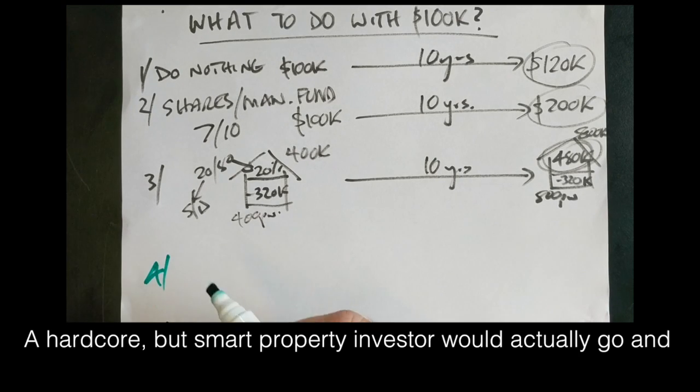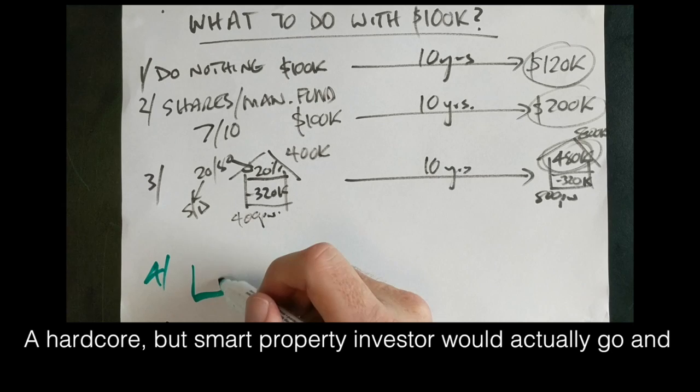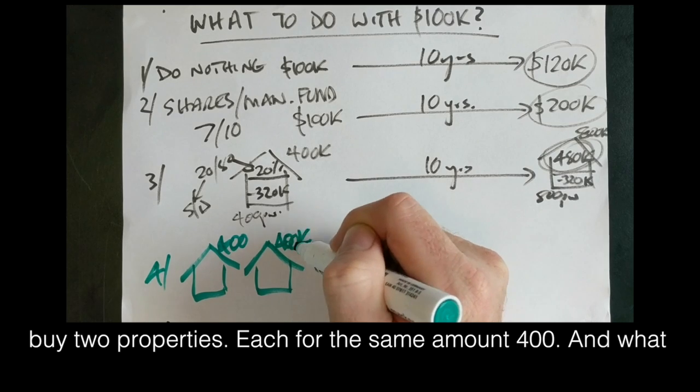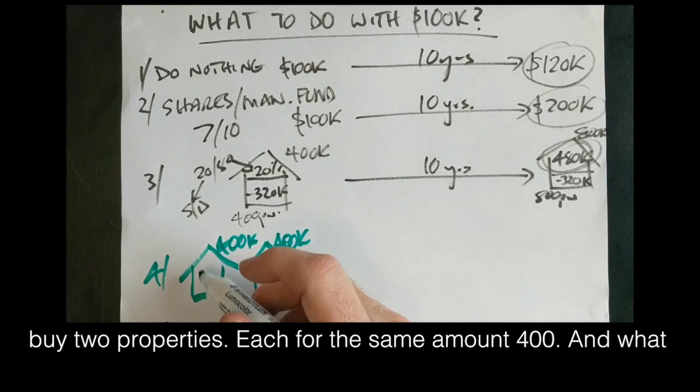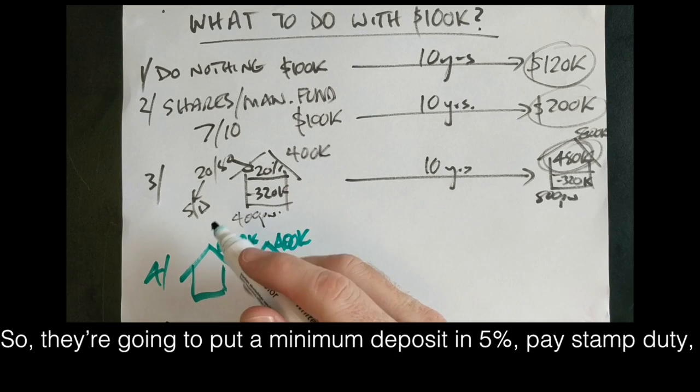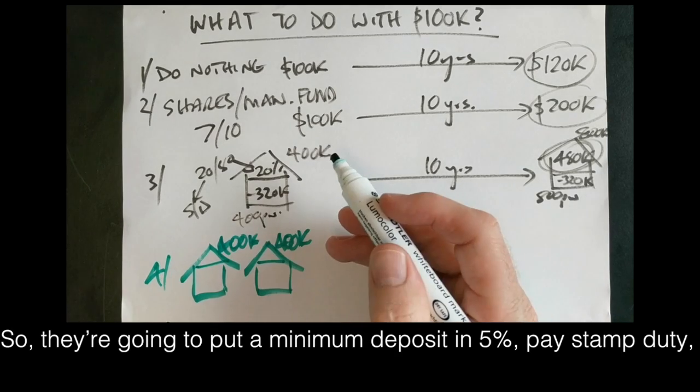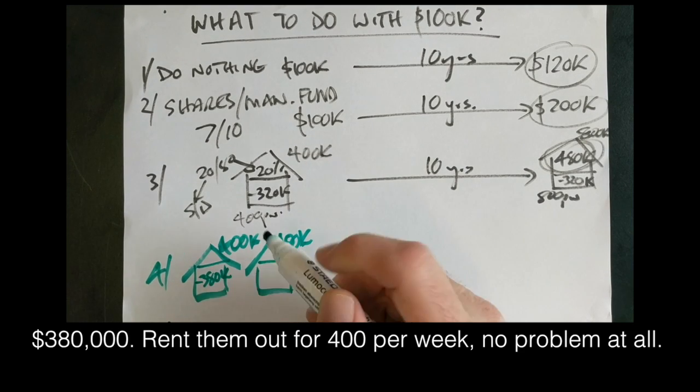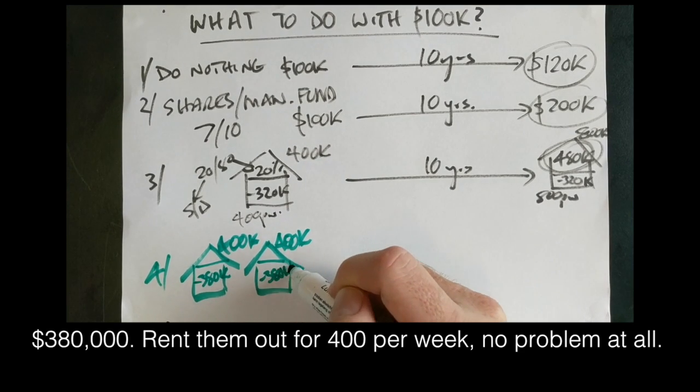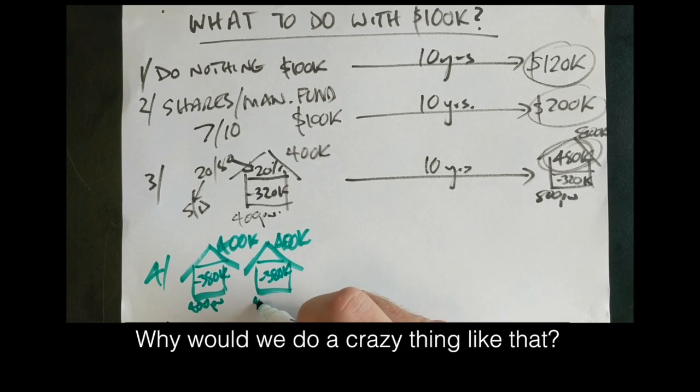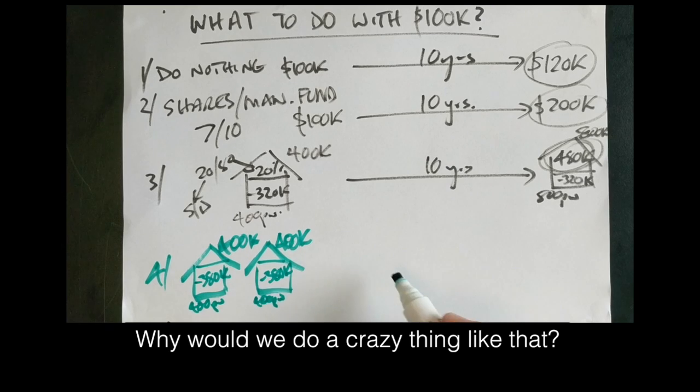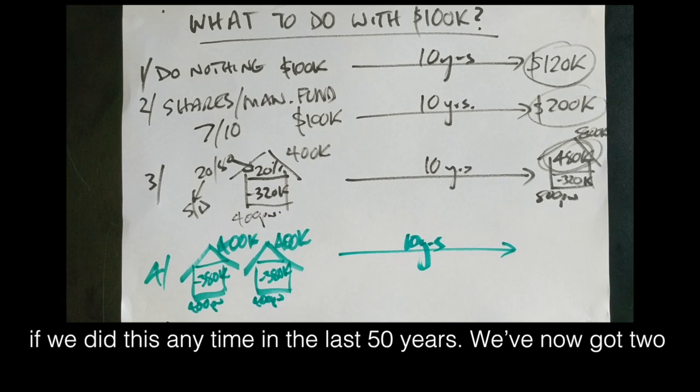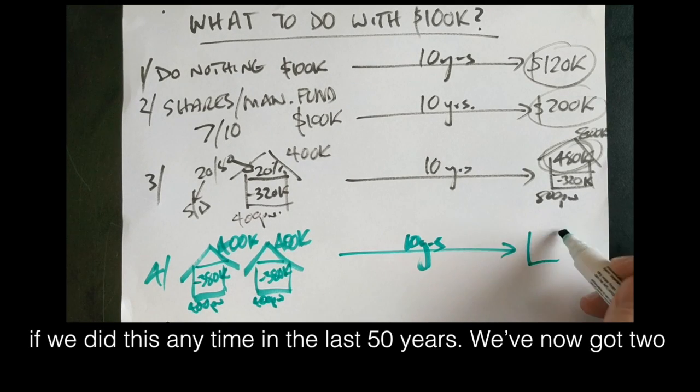Now a hardcore but smart property investor would actually go and buy two properties, each for the same amount, $400,000. And what they would do is get into each of those by the skin of their teeth. So they're going to put a minimum deposit in, 5%, pay stamp duty and pay mortgage insurance. So the mortgage is going to be $380,000. Rent them out for $400 per week, no problem at all. Now why would we do a crazy thing like that? Well, let's just see what happens to that portfolio in that same time if we did this any time in the last 50 years. We've now got two properties.